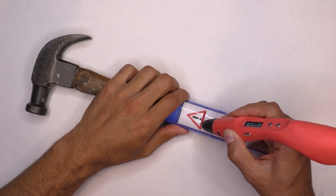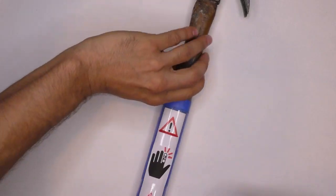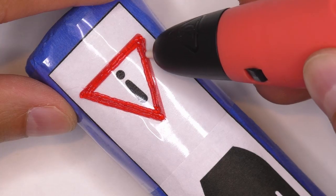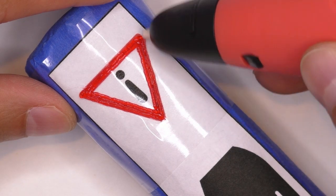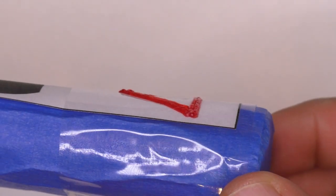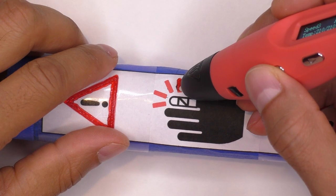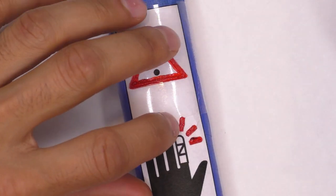With the pen, we're starting by adding in the red and black details of the graphic. I generally find that with a 3D pen it's best to add the small details first and then fill in the larger areas around it.